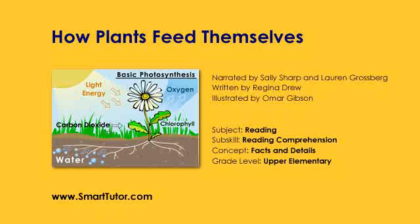Have you ever wondered how plants feed themselves? Most plants create meals for themselves in the form of sugar. This process is called photosynthesis. The word photo means light, and the word synthesis means making. Photosynthesis means making food with light.